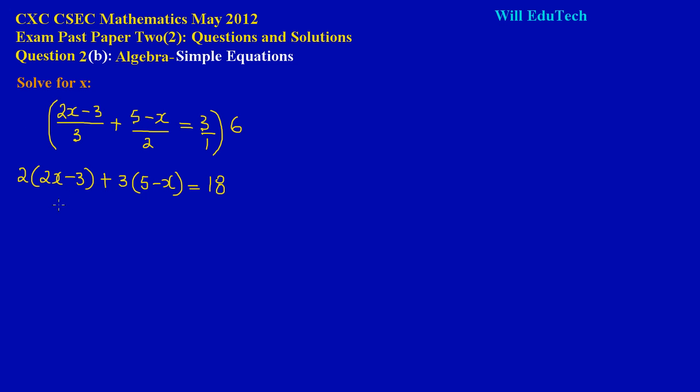To simplify this, I am going to use a 2 here and multiply it by my 2x there and by my negative 3 there. So 2 times 2x gives me 4x, and 2 times negative 3 gives me negative 6.